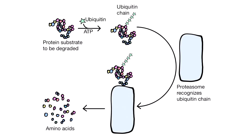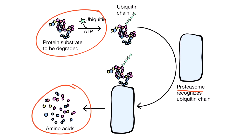Here's an illustration depicting the ubiquitin proteasomal degradation pathway. The protein substrates to be degraded are tagged with ubiquitin chains in the presence of ATP. Then, the ubiquitin-tagged proteins are recognized by the proteasome, which is an organelle that digests proteins. The proteasome breaks down the protein into amino acids, and due to the destruction of proteins, the cell size decreases.